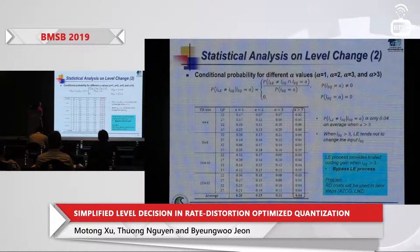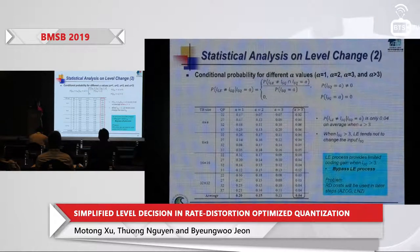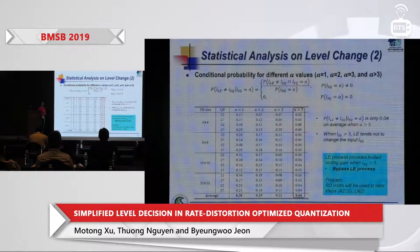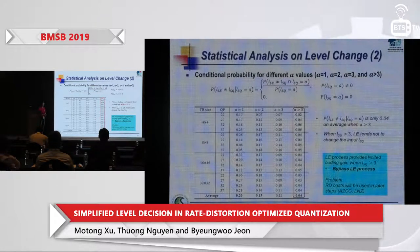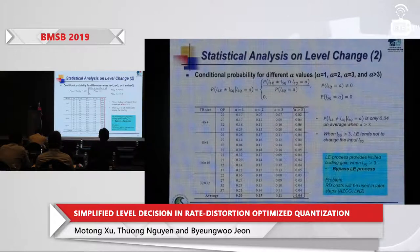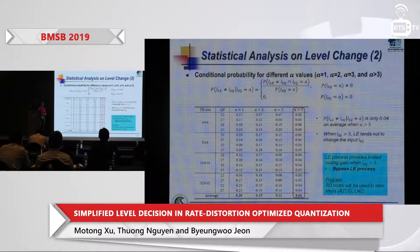The results show that as a increases, the average conditional probability decreases. Specifically, the average conditional probability is only 0.04 when a is greater than three. This means when L_SQ is greater than three, the level estimation stage tends not to change the input value, providing very limited coding gain.